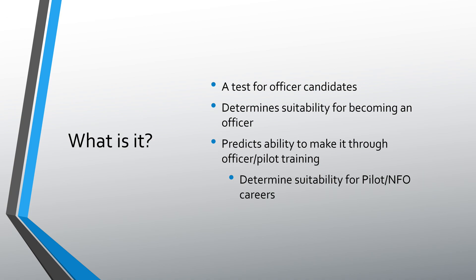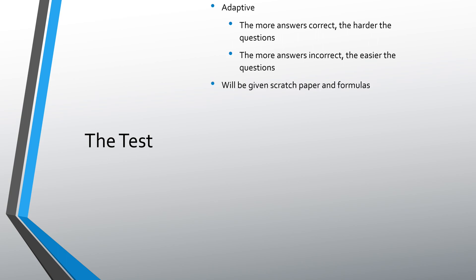So the better you do, the better your odds are of making it through whatever you want to do. So the test itself is adaptive. The more answers correct, the harder the questions get. So if you're getting questions like what color is the sky, then you're doing something wrong because obviously you're getting answers incorrect. So on top of that, you're going to be given a piece of scratch paper and some formulas. The formulas themselves will not be on a piece of paper. They will be in the formulas tab in the top right of your screen on the computer whenever you take the algebra or the physics section of the test.